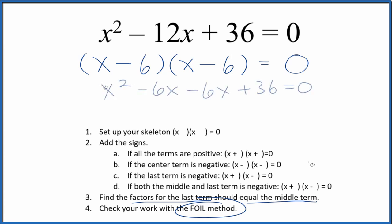We end up with, we combine these two terms here, negative 6x and negative 6x. That's negative 12x. We have our x squared, our 36. This is the same thing as we started with. So we correctly factored the equation x squared minus 12x plus 36.